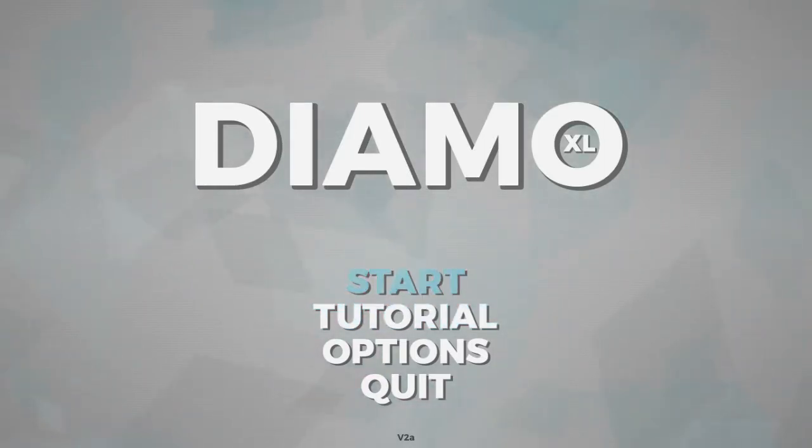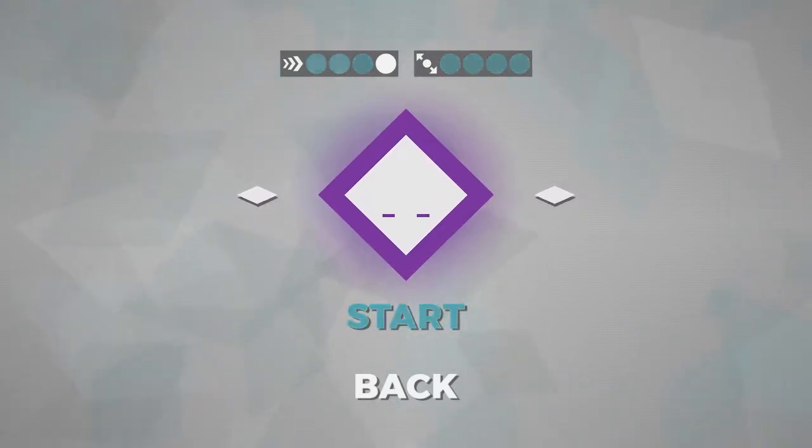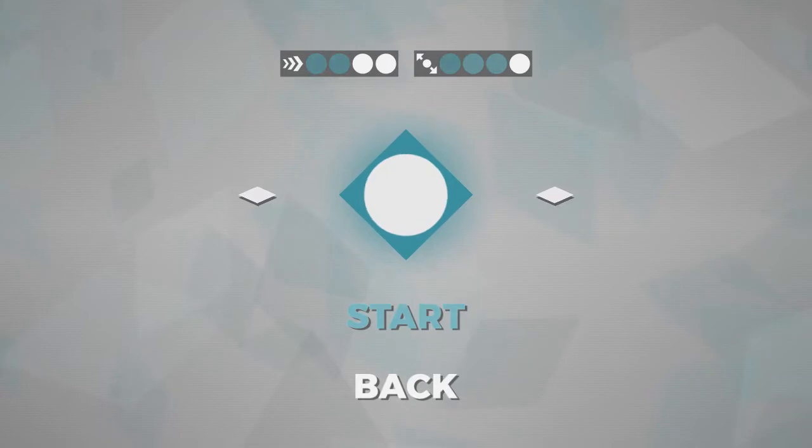We're not going to bother with the tutorial, I'm just going to explain it instead. So, let's just go to start. First of all, there is a character select screen. There are some characters you can unlock. You simply unlock them by playing the game, and that's pretty much it.